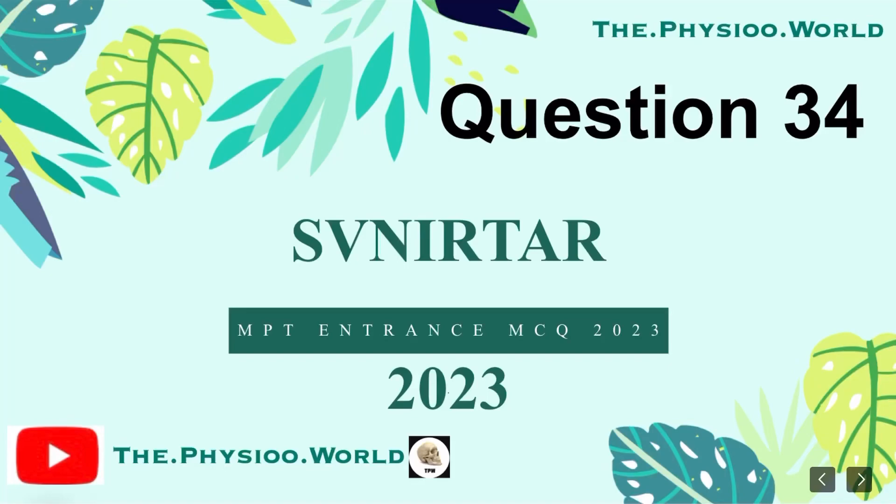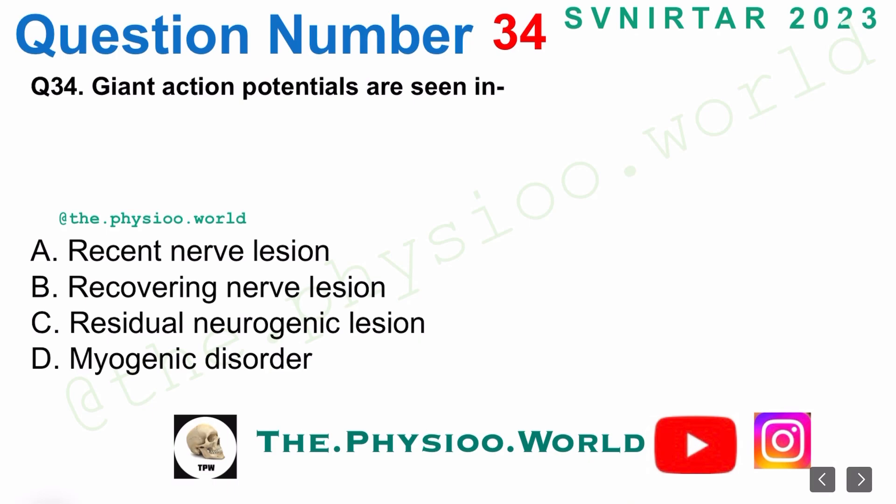Hello everyone and welcome to the Physio World. In this video we will discuss MCGU 2023 question number 34. Question number 34 is: giant action potentials are seen in — options are A: recent nerve lesion,